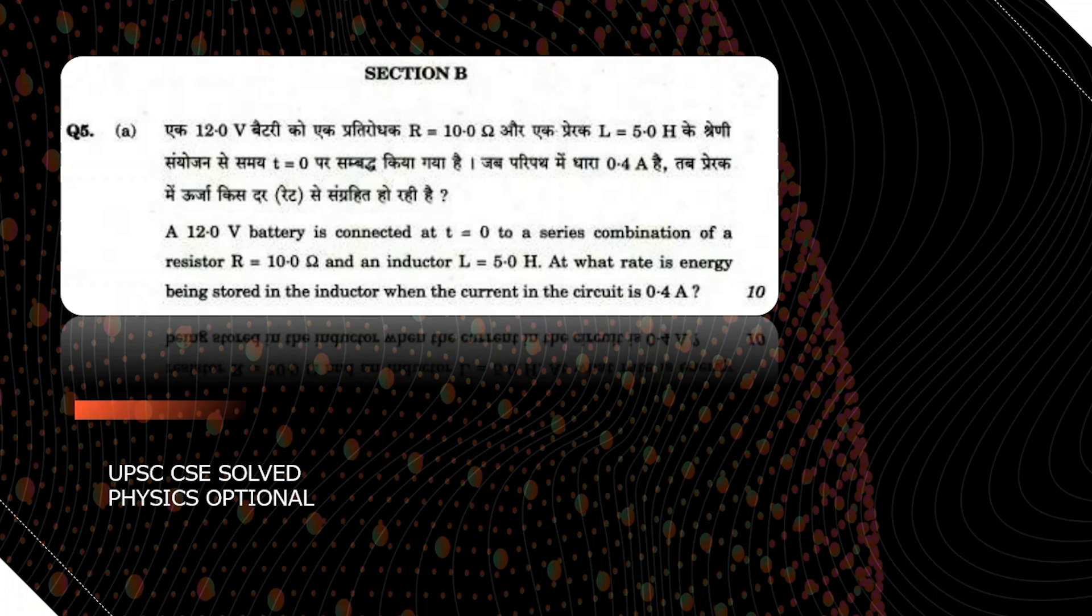Hello everyone, in today's video we will be solving one of the previous year questions of UPSC CSE physics optional. The question says a 12 volt battery is connected at t equal to 0 to a series combination of...